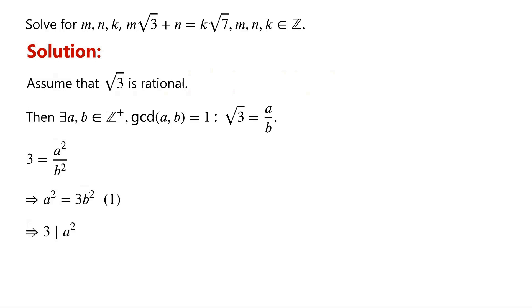Euclid's lemma states that if a prime divides a product, then it divides at least one of the factors. By Euclid's lemma, 3 must divide a. Then we let a = 3c, where c is a positive integer.